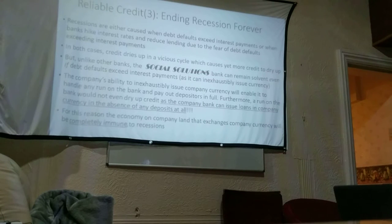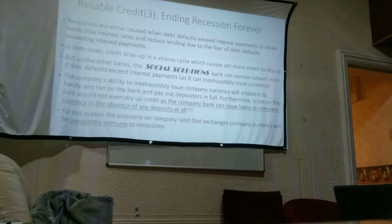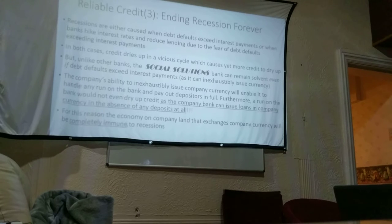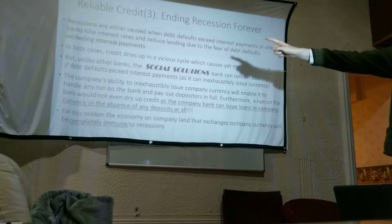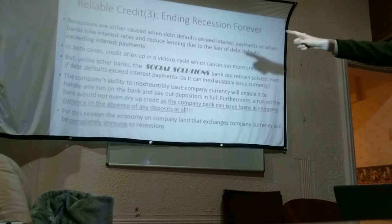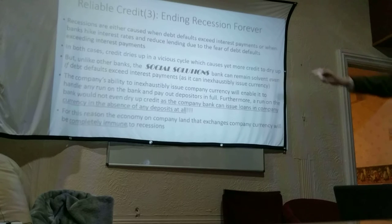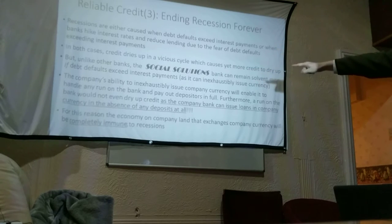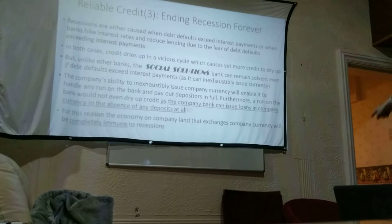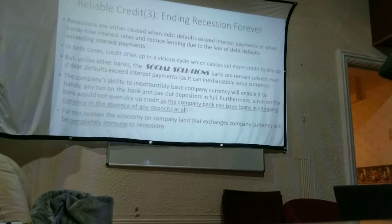Reliable credit: ending recessions forever. Recessions are either caused when debt defaults exceed interest payments, or when banks hike interest rates and reduce lending due to the fear of debt defaults. In both cases, credit dries up in a vicious cycle, which causes yet more credit to dry up. But unlike other banks, Social Solutions Bank can remain solvent even if debt defaults exceed interest payments. The company's ability to inexhaustibly issue company currency will enable it to handle any run on the bank and pay out deposits in full. Furthermore, a run on the bank would not even dry up credit, as the company bank can issue loans in company currency in the absence of any depositors at all.